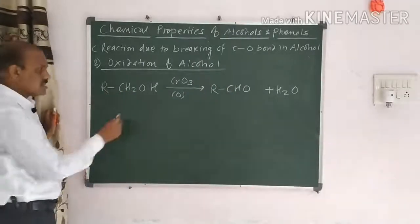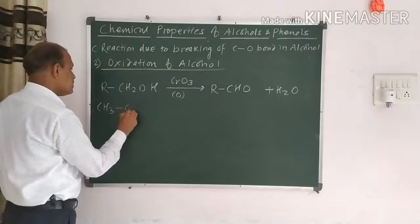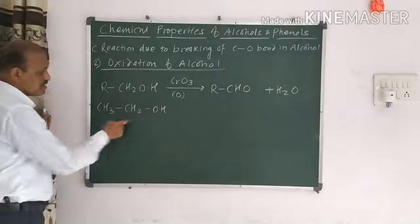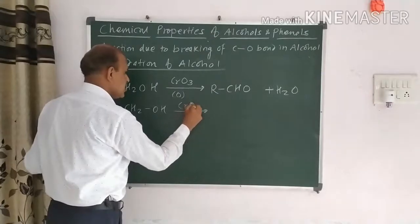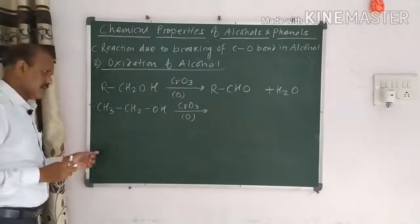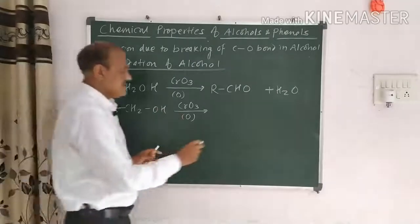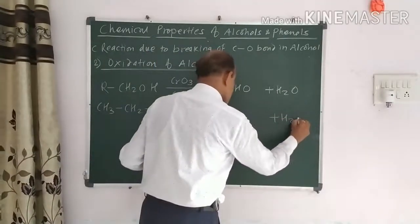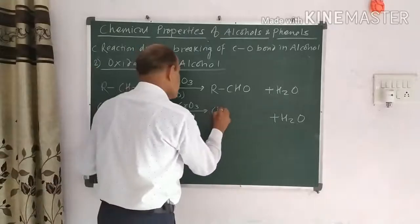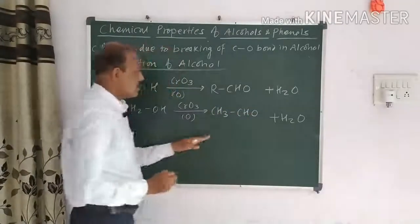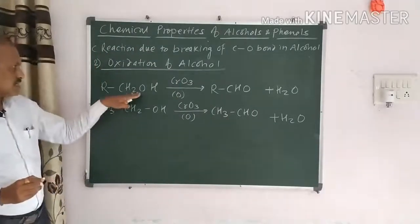Taking an example: CH3CH2OH (ethyl alcohol) reacts with chromic anhydride CrO3 as the oxidizing agent. The CH2OH group is converted to CHO — one hydrogen from the carbon and one from the oxygen combine with O to form H2O — giving CH3CHO, that is, acetaldehyde is formed. This is the oxidation of primary alcohol.